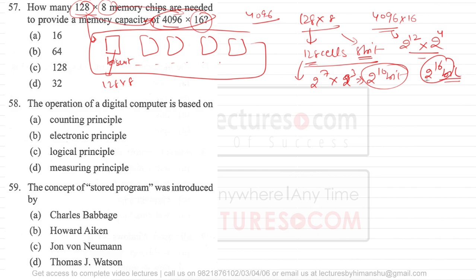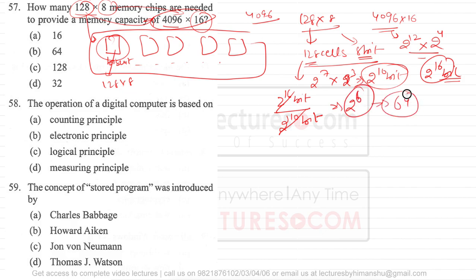To store 2 raised to power 16 bits, where every chip stores 2 raised to power 10 bits, we require 2 raised to power 6 such chips. 2 raised to power 6 equals 64. So the answer is option B — 64 chips — because we need to combine these memory chips to create the bigger memory capacity.